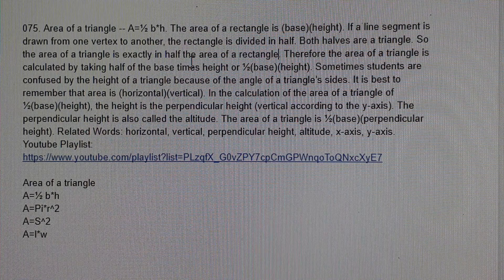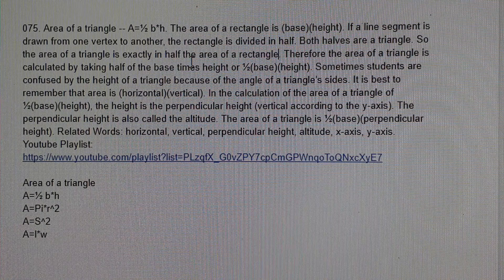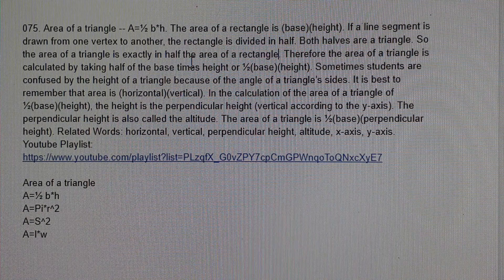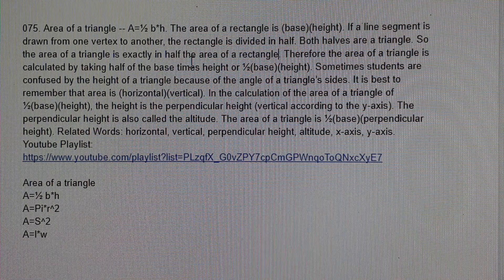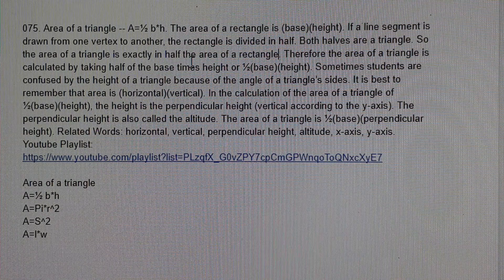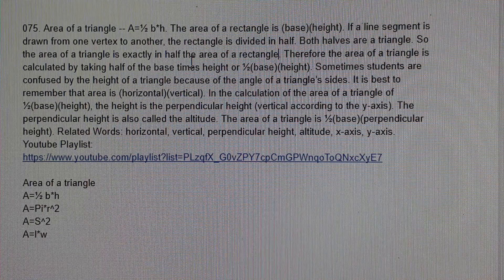If a line segment is drawn from one vertex to another, the rectangle is divided in half. Both halves are a triangle. So the area of a triangle is exactly half the area of a rectangle.